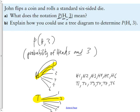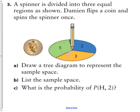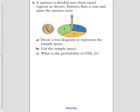Next question: the spinner is divided into three equal regions. Damian flips a coin and spins the spinner once. Draw a tree diagram to represent the sample space. For this one, my tree diagram is going to have the coin first — heads and tails — and the spinner second, with regions one, two, and three.